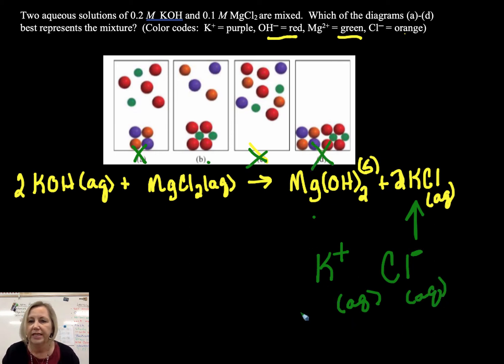So D is showing that as a solid. So B is our correct one. It's showing us that aqueous KCl's. Notice I have two purple potassium ions and two chloride ions to show the balanced equation, and then my solid on the bottom of the vessel, magnesium hydroxide.